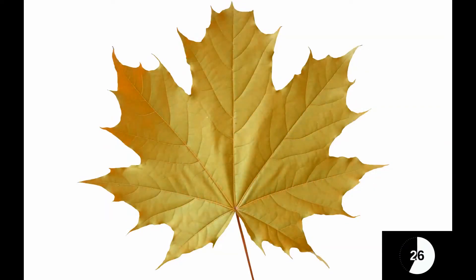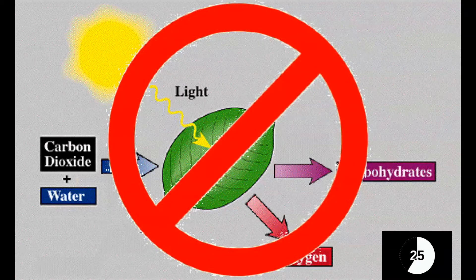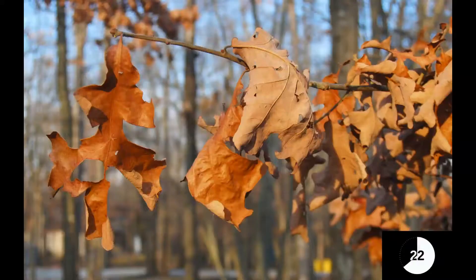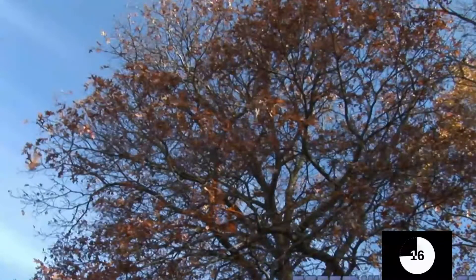Since no more photosynthesis is taking place inside of the leaf, it begins to shrivel up and hangs on the tree by the mere veins that once gave it water. Once it begins to get windy or rainy, these leaves will break free from their veins and fall off the tree.